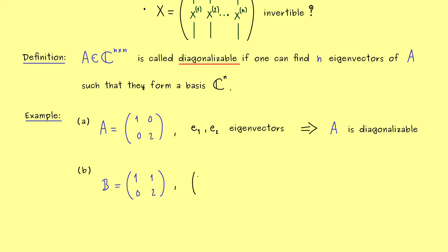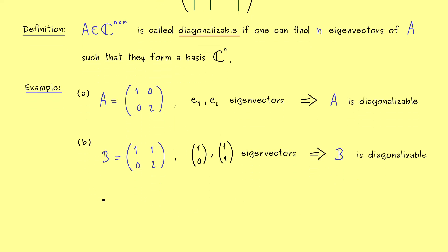So let's call it the matrix B and let's write it as a 2×2 matrix again. And now I want 1, 1, 0, 2. As before, we immediately see that the vector (1,0) is an eigenvector again. But obviously E2 is now not an eigenvector. However, after a quick calculation, we see that for example (1,1) is an eigenvector. And these two eigenvectors here are enough and we immediately see they form a basis of C^2 as well.